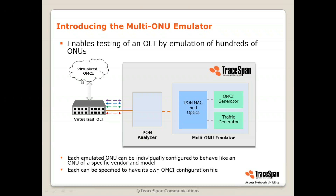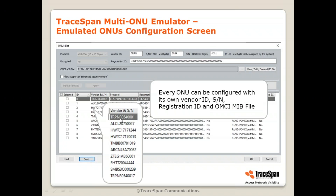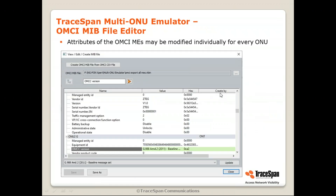Each ONU can be specified to have its own OMCI configuration file. This is the configuration screen where you define your different emulated ONUs. We have an example of nine different ONUs here, and if we zoom in, we see that each one has a different vendor — the first four letters represent the vendor. Each one can be configured with its own vendor ID, different serial number, different registration ID, and different OMCI MIB file. Looking at the OMCI attributes, you can see the OMCI version — just one of the attributes that can differ across emulated ONUs — as well as the software version and so on.